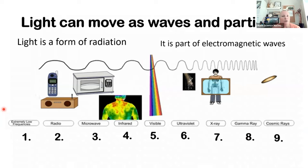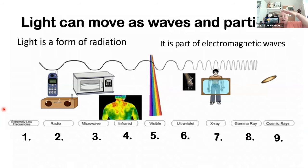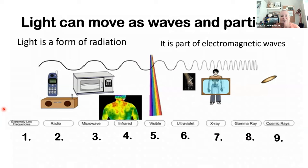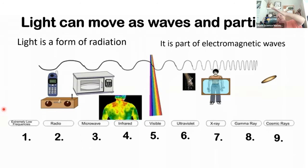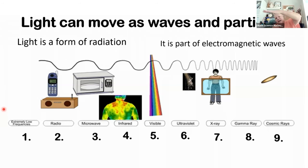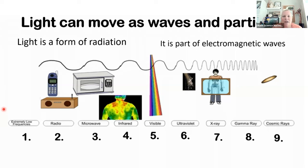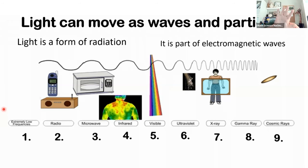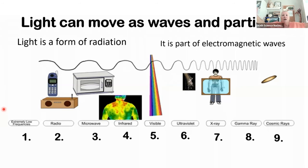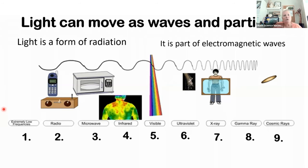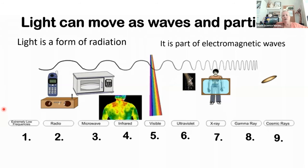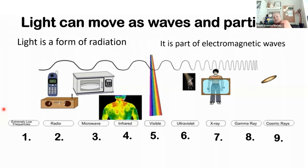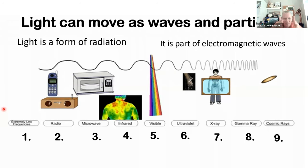Light can move as a wave and as a particle. When the wave has really high squiggles, that's where we get cosmic rays and x-rays and gamma rays. When the waves are more spread out and relaxed, that's where we get radio waves and microwaves. But the light that you see — visible light — is right in the middle of this electromagnetic spectrum.